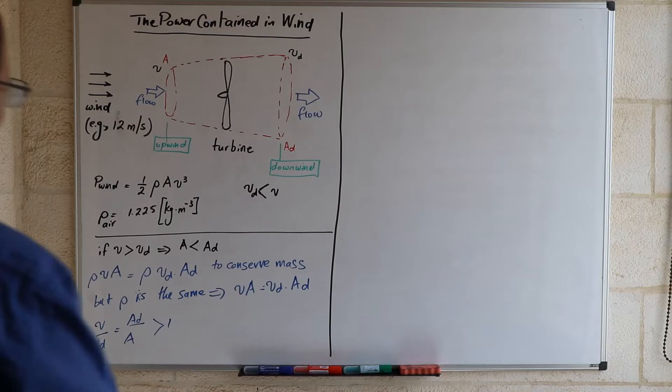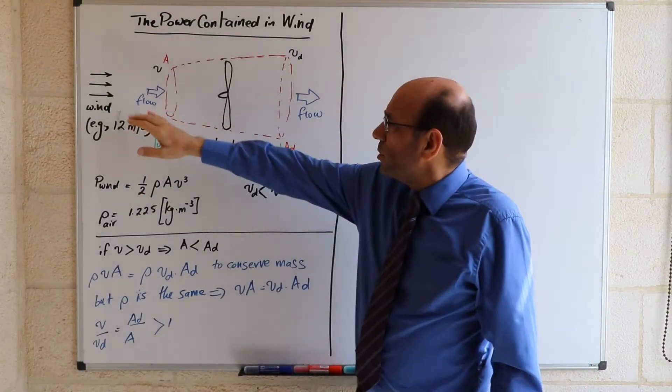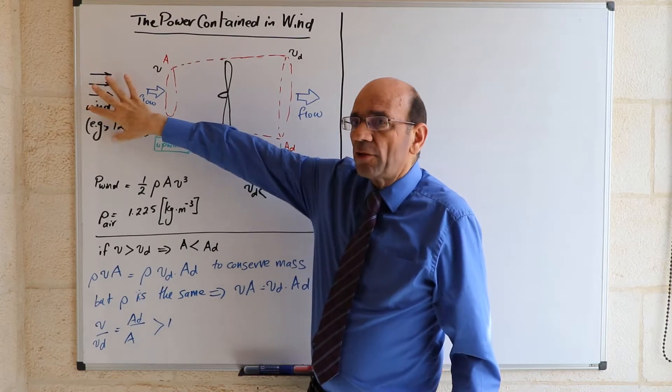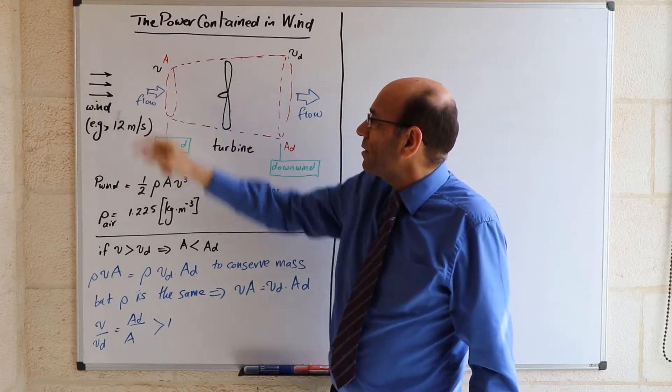In this lecture I will be looking at the potential power contained in wind. So if we have wind blowing from this point at a certain speed, we will refer to this speed as V.